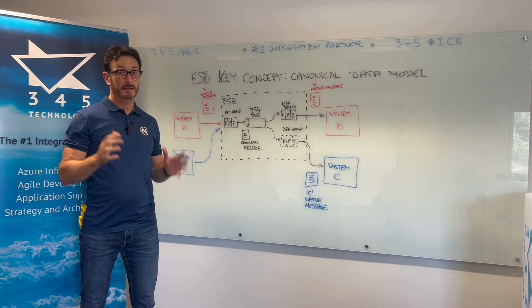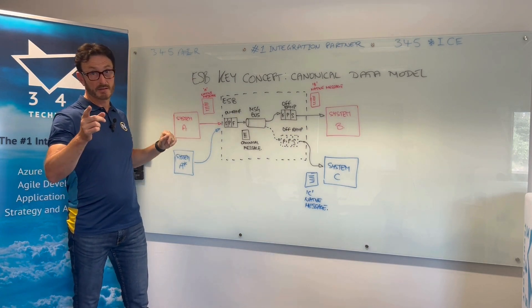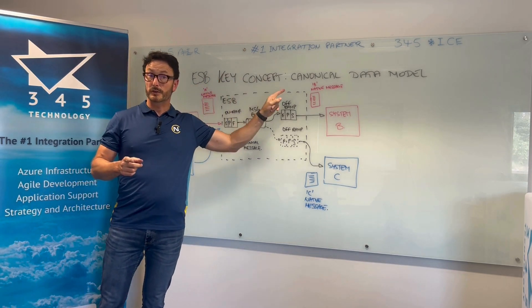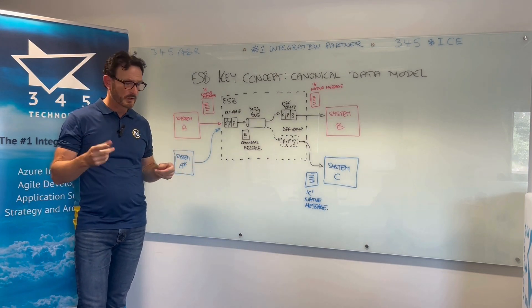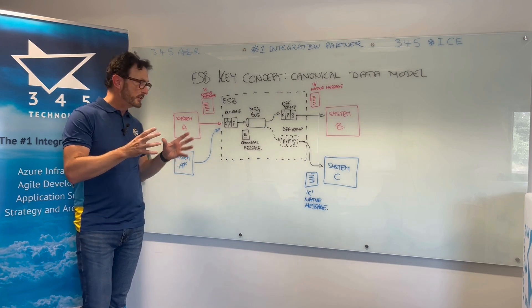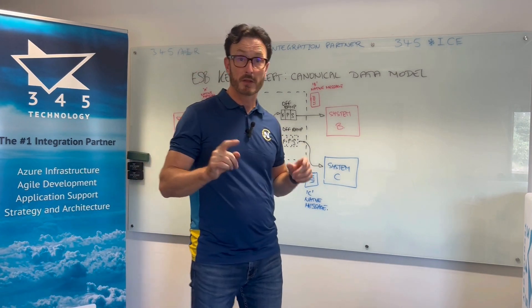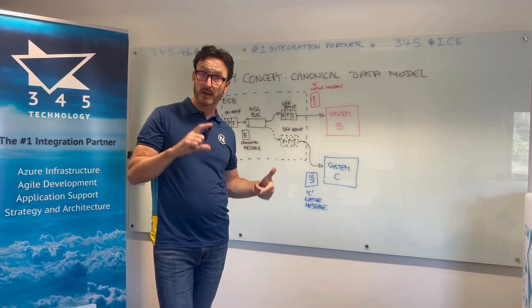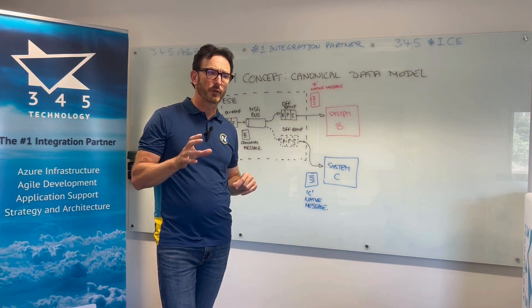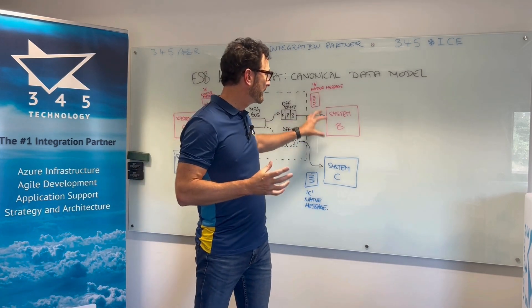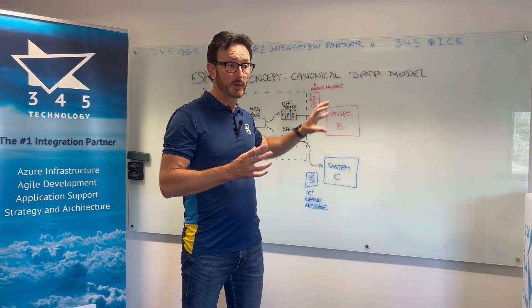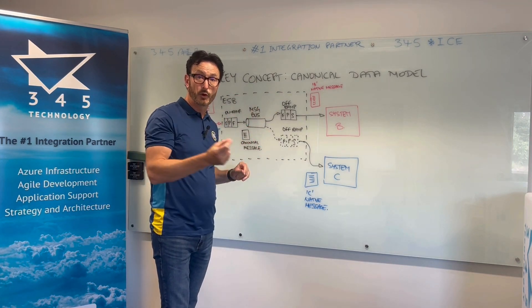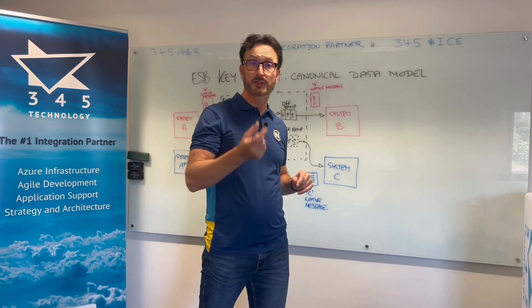Today we're going to cover a key topic in integration, especially when you look at an enterprise service bus (ESB), and that key concept is a canonical data model. Each system that you integrate with typically has its own data format — it might be an industry standard or an application-proprietary one. A canonical is a generic format that you own, containing all the data you need to service your business process.